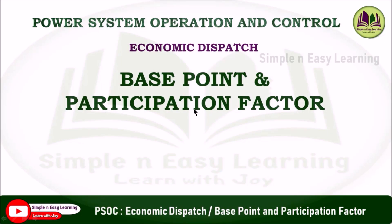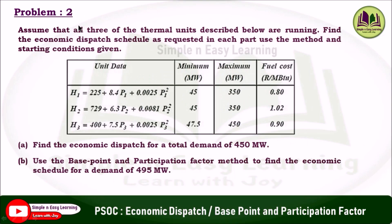Base Point and Participation Factor Method — Solved Problem 2. Assume that all three thermal units described below are running. Find the economic dispatch schedule as requested in each part. The unit data is given with minimum and maximum limits and the fuel cost. First, find the economic dispatch for a total demand of 450 megawatt; second, use the base point and participation factor method for a demand of 495 megawatt. The difference in demand is 45 megawatt.